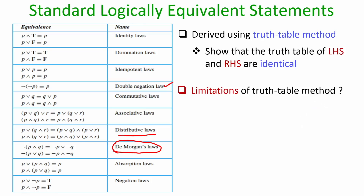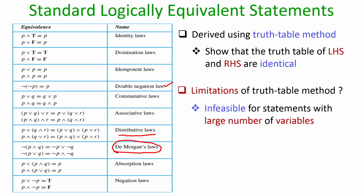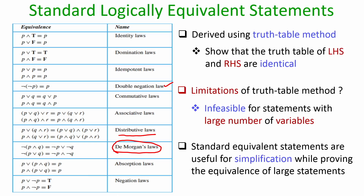However, the truth table method of verifying logical equivalence has a limitation: it works only as long as the number of propositional variables is small. In the identities shown, there are at most three propositional variables, giving only eight rows which are easy to manage. But if a logical identity has say 20 variables, the truth table would have 2²⁰ rows, which is infeasible to draw. That is why it is infeasible to verify logical equivalence using the truth table method for large numbers of variables.